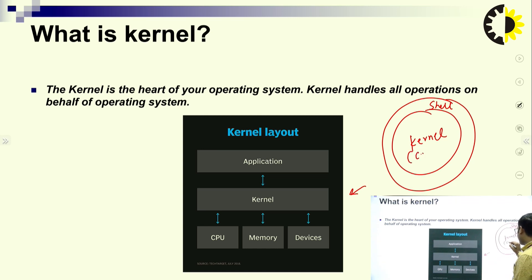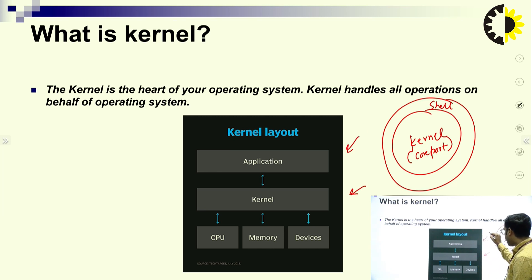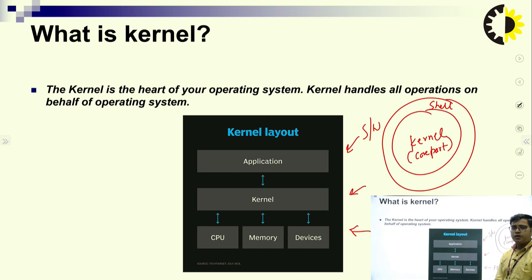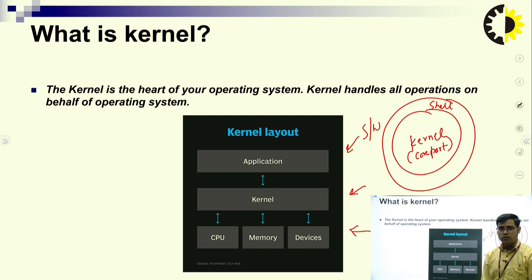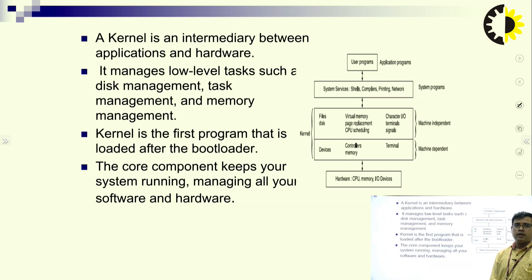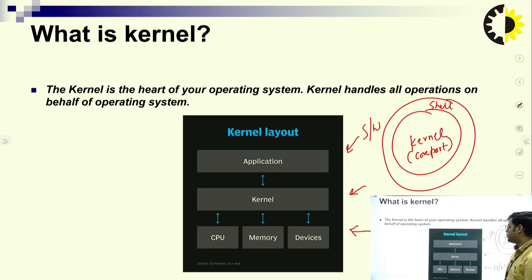Kernel is the core part of an operating system. It provides an interface between the application programs like software and the hardware like CPU and memory devices. All functionality we take from the kernel. Kernel is an intermediary between application and hardware, as shown in the diagram.